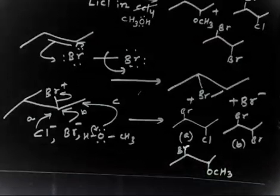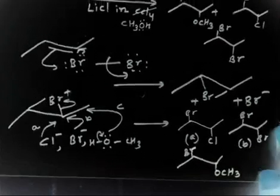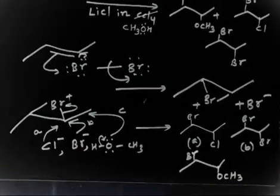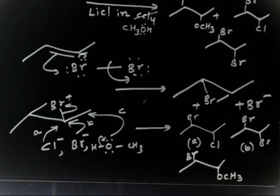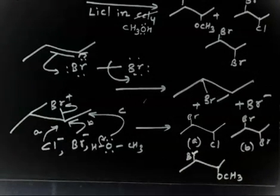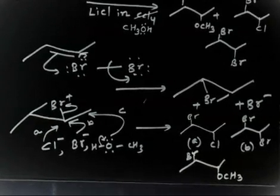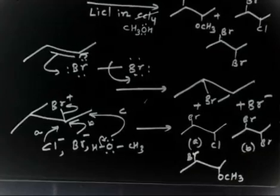We are getting a mixture of products because there are three kinds of nucleophiles present in this reaction. That is why we follow these different paths. The key concept is simply formation of a cyclic halonium ion followed by attack of a nucleophile. Copy this down and we will go to the next reaction.